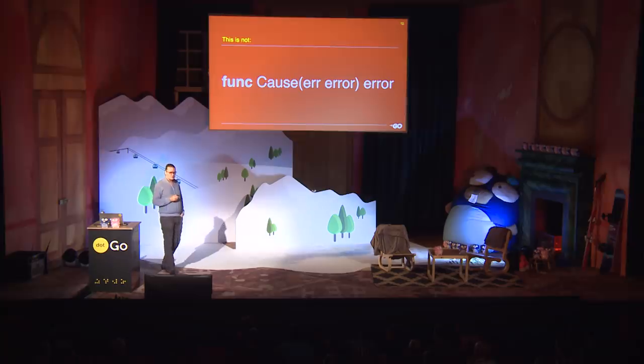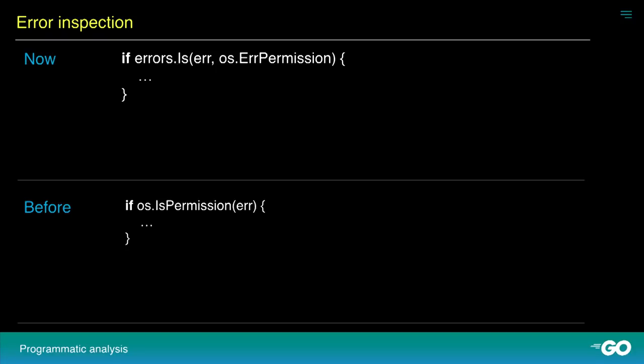We did not provide a 'cause' function — this is the most common pattern we see in the community. But the cause API does not let us do the Is method pattern, and it also doesn't allow us to check multiple errors in the error chain. So why is this important? Looking at errors.Is for permission: before, we had this predicate, and now we can just replace it with an errors.Is call. Because we have this Is method, even dynamic errors can be a permissions error — so we don't need the permissions predicate anymore.